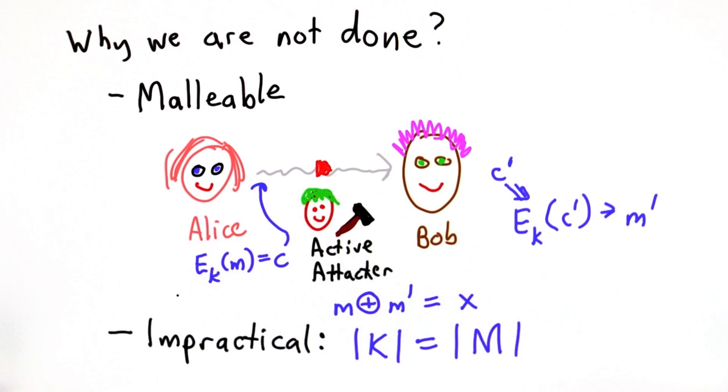So maybe what we should try to do is to find a more practical, perfect cipher. Unfortunately, Claude Shannon proved that that's not possible. So that's what we're going to look at next, is why this property that the key space has to be at least as big as the message space is a requirement for a cipher being perfect.